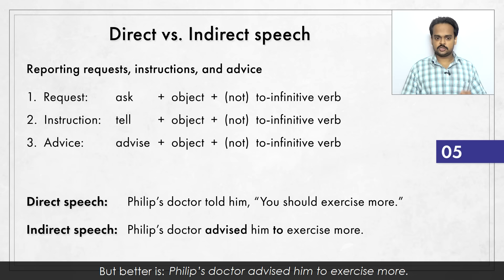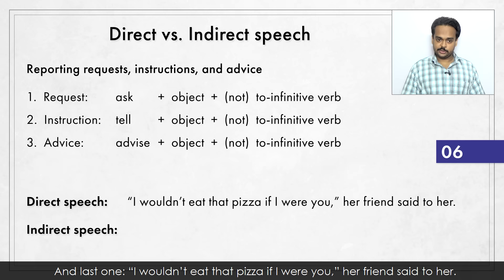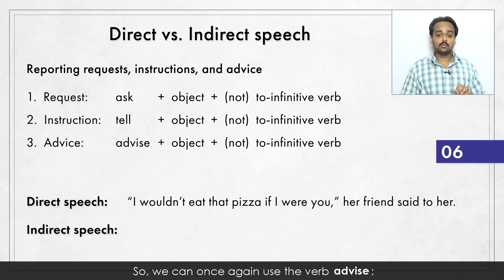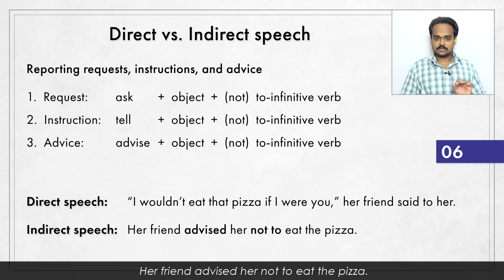And the last one: "I wouldn't eat that pizza if I were you," her friend said to her. This sentence looks like a conditional, and it is. But this is a common way of giving advice – "I would do this" or "I wouldn't do that if I were you". So we can use the verb "advise": her friend advised her not to eat the pizza. You can also say "that pizza" – it means the same thing.